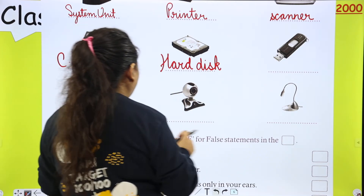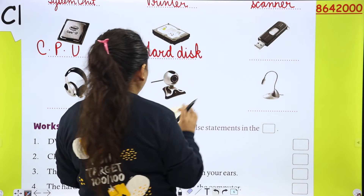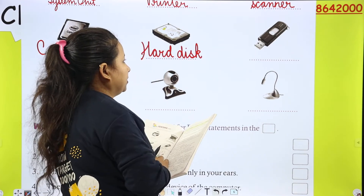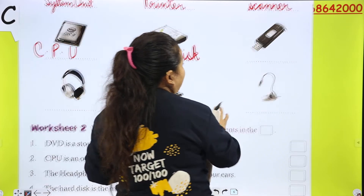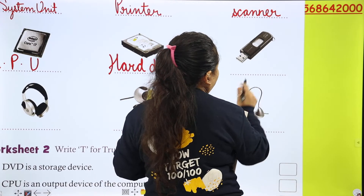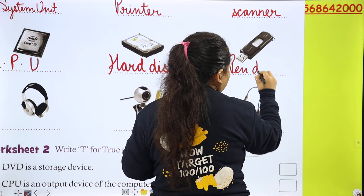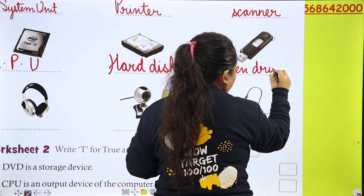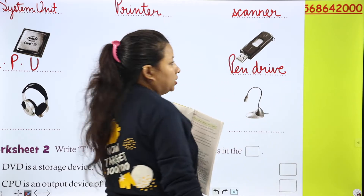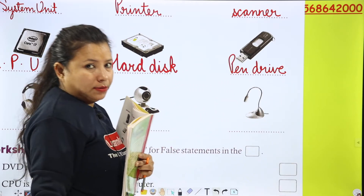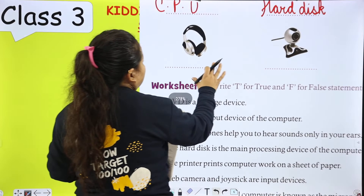This is a storage device. Next is pen drive. You can see these at home too — we can store a lot of things in it: videos, pictures, and more.